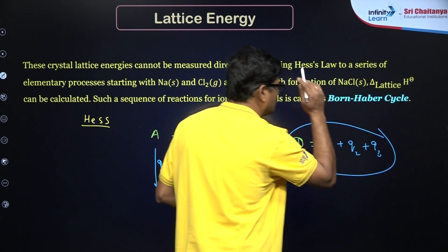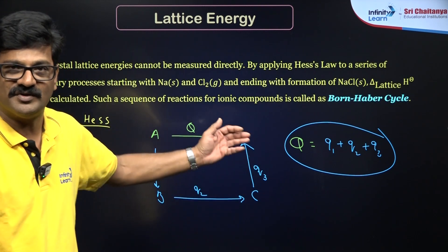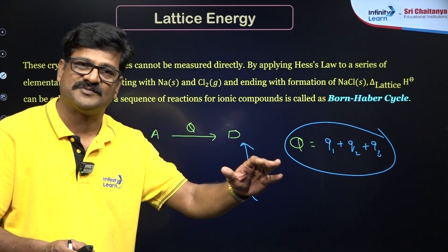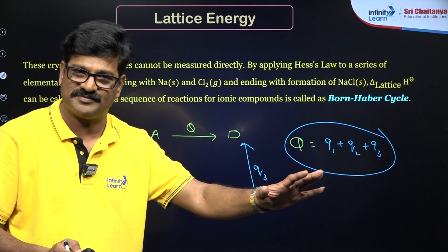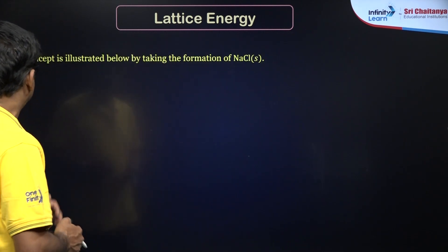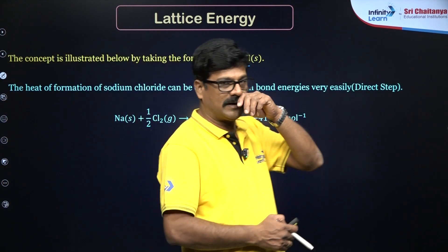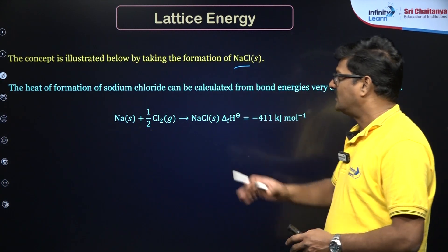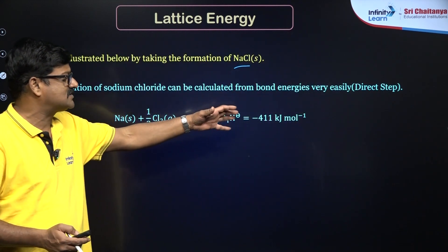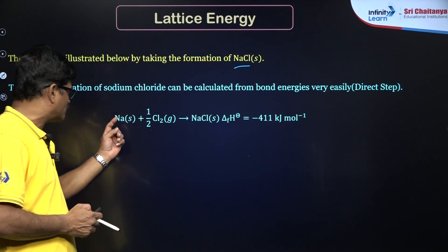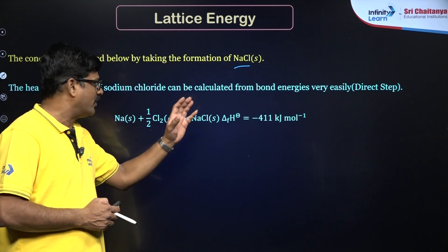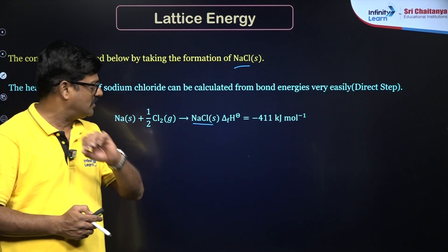This applies not just here but in every part of thermochemistry. The heat of reaction is the same whether the reaction takes place in a single step or multiple steps. Let us apply this to the sodium chloride lattice formation. The concept is illustrated by taking sodium chloride lattice formation. Sodium is a solid and chlorine is a gas, and you get one mole of sodium chloride as a solid, for which minus 411 kJ is the enthalpy of formation in a single-step reaction.